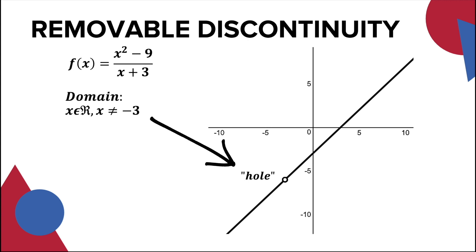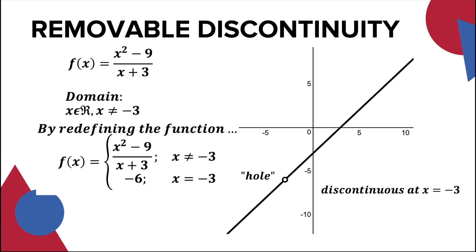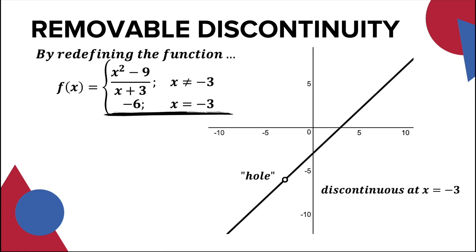This makes the graph discontinuous at x = -3. As long as the limit of the function exists, the hole which makes it discontinuous can be removed by redefining the function. For this example, we can redefine the function at x = -3 to remove the hole and to make the function continuous at x = -3.